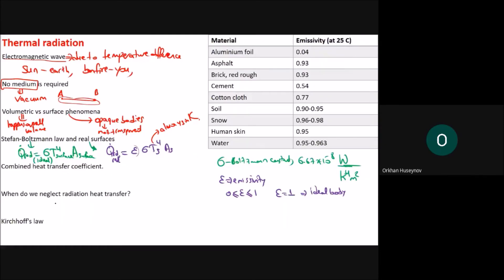We neglect radiation heat transfer when forced convection is present, because in forced convection the radiation contribution is very small. For natural or free convection, however, the radiation part is also significant and should not be neglected.